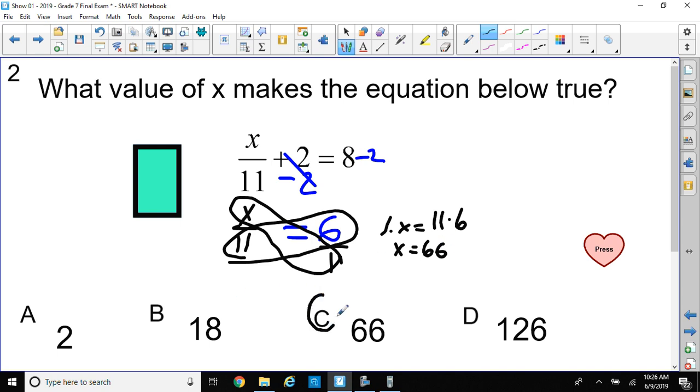1 times X is X and 11 times 6 is 66. So, my choice is going to be choice C, 66. And you can check that by saying when X is equal to 66, 66 divided by 11 plus 2 should equal to 8. So, we have to check that. 66 divided by 11 is 6, as we said earlier. 6 plus 2 is 8. And it does check out it's equal to 8. So, both sides are checking out to be equal when X is equal to 66.